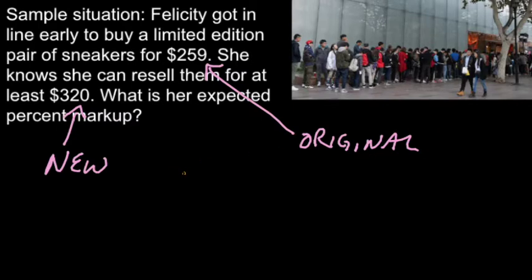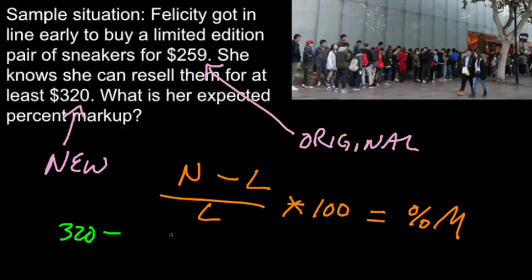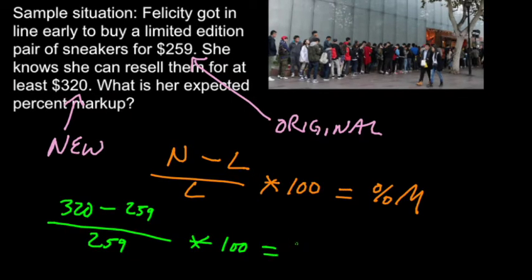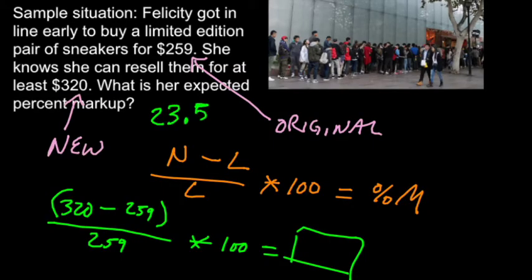My percent change formula says: new minus old, divided by old, times 100 equals percent markup. I use L for old because if I write O it looks like a zero. Inserting the numbers: 320 minus 259, divided by 259, all times 100 equals my percent markup. Running that through a calculator gives approximately 23.5% — that's the markup.